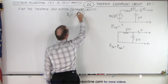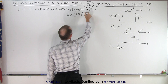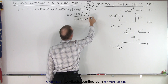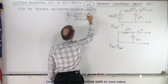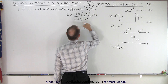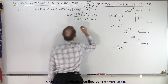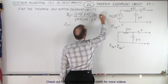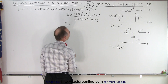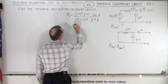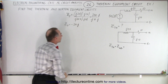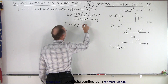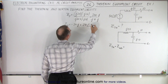Z_parallel uses the product over the sum: j20 multiplied by -j10, divided by j20 plus -j10. That gives j×j = -1, times -1 is positive, so we get 200 divided by j10. That equals 20 divided by j, and multiplying gives us -j20, or minus J20.